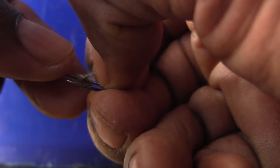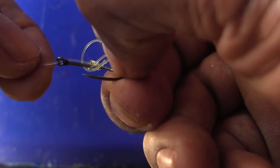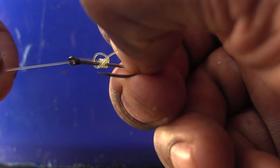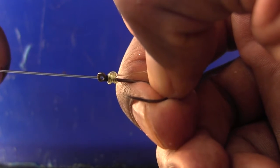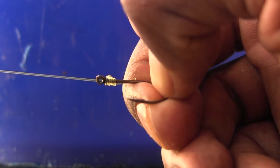So we're bringing that through the loop here. Just grabbing that little tag line here so I can give you a view of what I'm doing. I'm holding that little tag line. Now I'm just pulling the other end here. And you'll notice there's our snell. Pulls it down nice and tight.